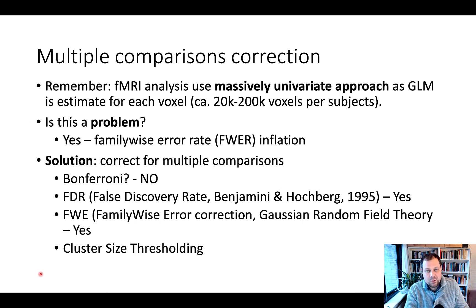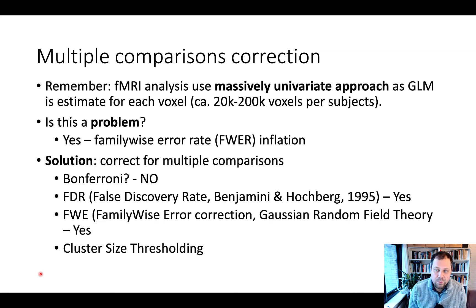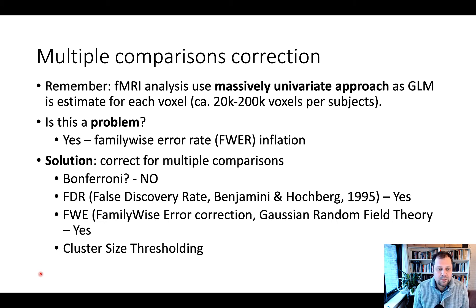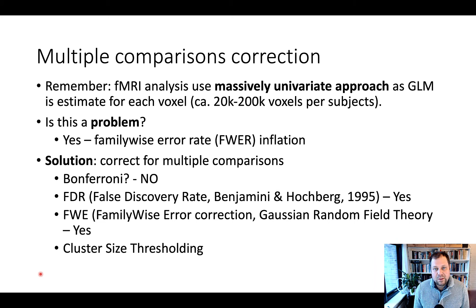Finally, we have cluster size thresholding, which is a two-step procedure. We have an initial cluster-forming threshold of 0.005 — so each voxel has to surpass a p-value of 0.005, or 0.001, which is probably a better value as shown in a recent paper. In addition to 0.001, we only accept as significant if there's a certain number of voxels that cluster together. This is based on the intuition that significant activation within the brain should not be a single voxel, but especially in cortex, it's multiple voxels next to each other showing this type of activation.